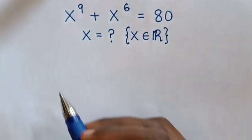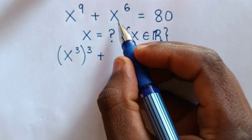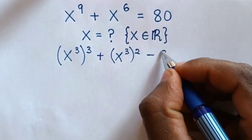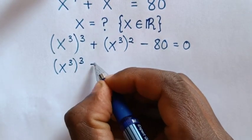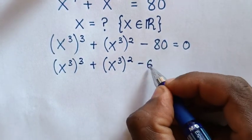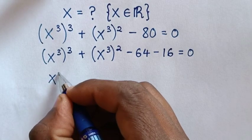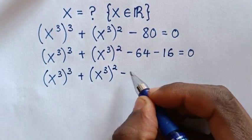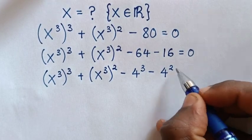First we take 80 to the left side. Then x power 9 is the same as (x³)³, and x power 6 is the same as (x³)², and we bring 80 to the left side to get minus 80 equals 0. Then negative 80 is the same as negative 64 minus 16, and we note that 64 = 4³ and 16 = 4².